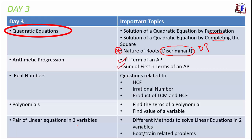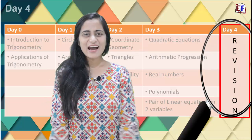Out of the five algebra lessons, quadratic equations and arithmetic progressions are high-priority lessons. Analyzing previous years' question papers, you get close to three to four questions from these two lessons combined. The remaining three lessons — real numbers, polynomials, and pair of linear equations — are not very important; you may get one or two questions from them. And finally, we are on day four.